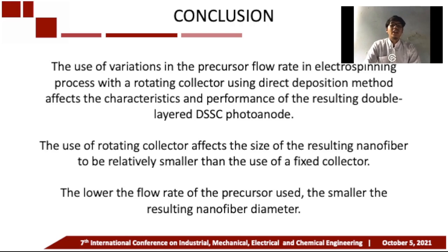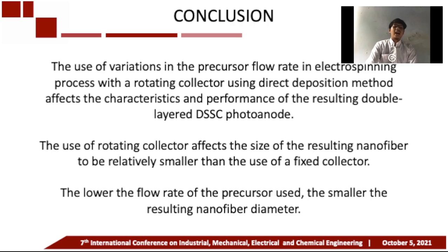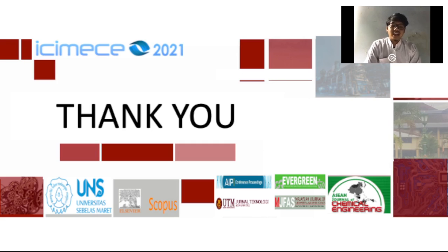In conclusion, the use of variations in solution flow rate in the electrospinning process with a rotating collector using the direct deposition method affects the diameter and morphological shape of the resulting double-layer DSSC photoanode. The use of a rotating collector also results in relatively smaller nanofiber sizes compared to a fixed collector. The lower the flow rate, the smaller the resulting nanofiber diameter and the wider the dye absorption area, which can lead to improved DSSC performance. Thank you for your interest and attention. Please feel free to contact our correspondence for questions. Wassalamualaikum warahmatullahi wabarakatuh.